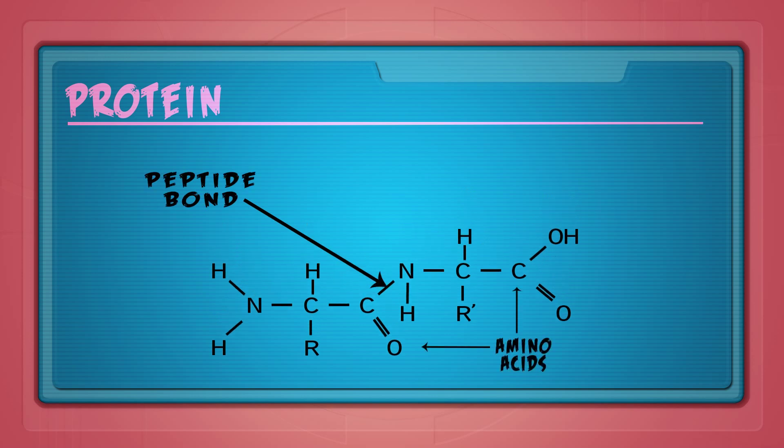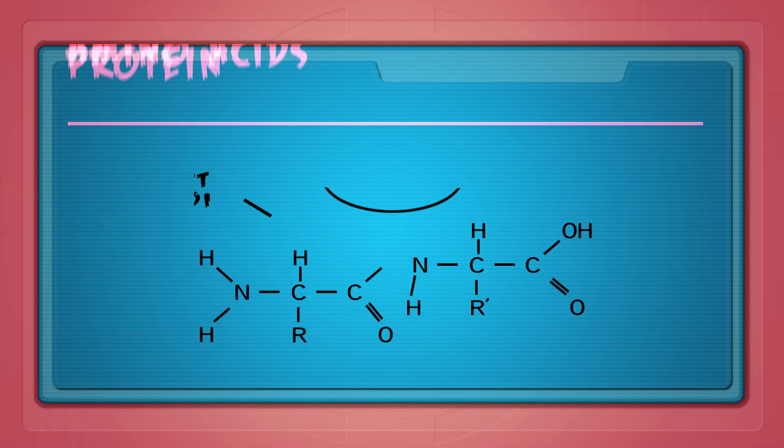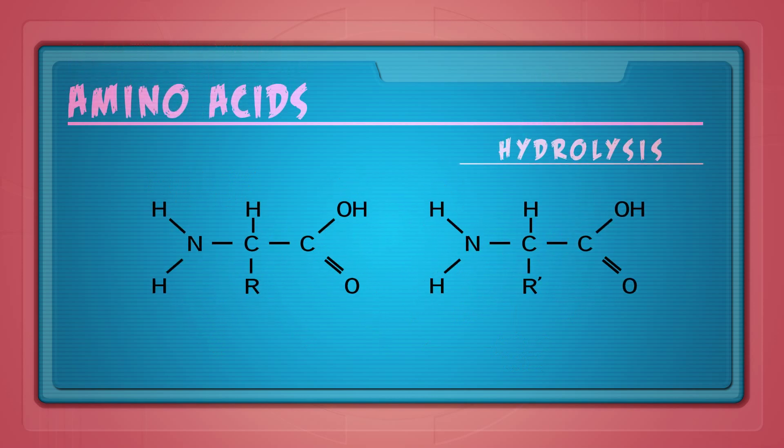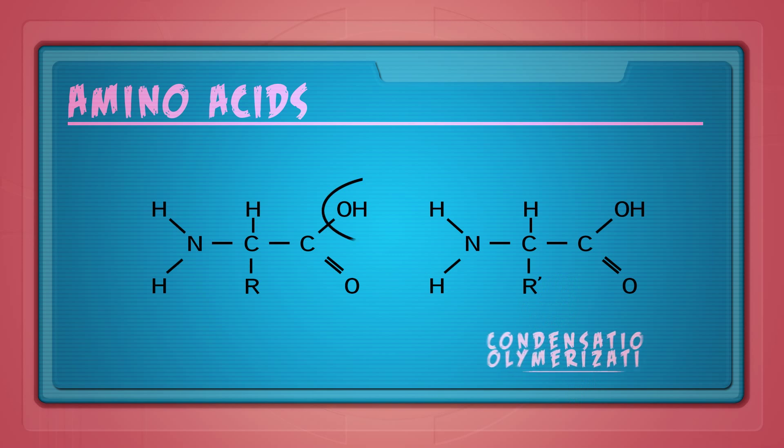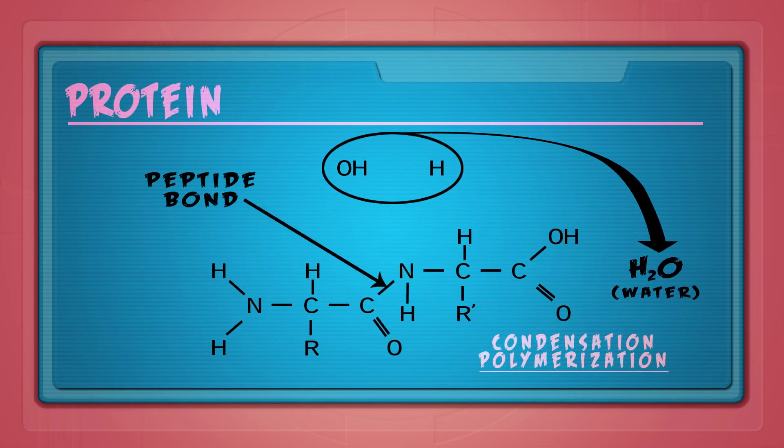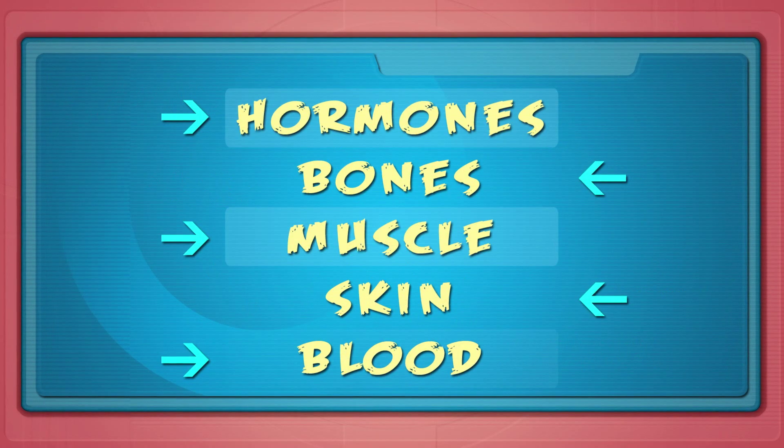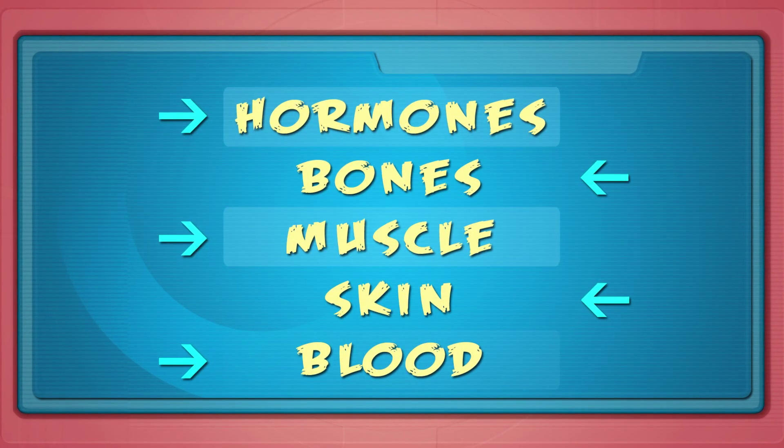During digestion, proteins are broken down into amino acids through hydrolysis. The amino acids dissolve in our blood and are carried to tissues and organs. There, the amino acids are either used as a source of energy or are assembled into proteins through condensation polymerization. These newly made proteins are used to make hormones, bones, muscle, skin, and blood.